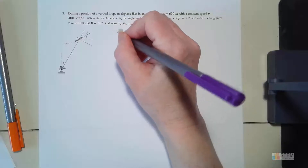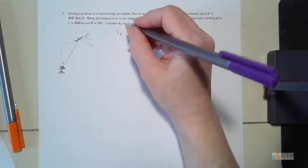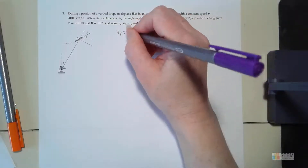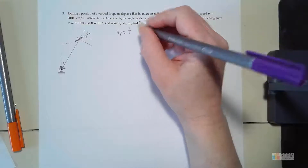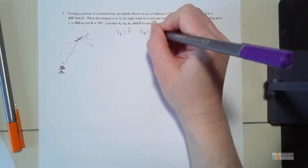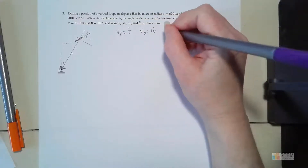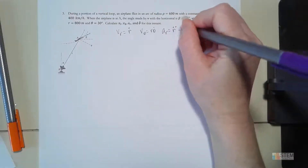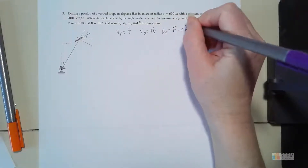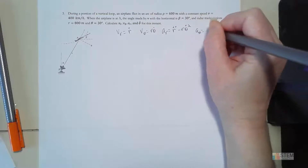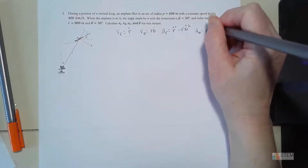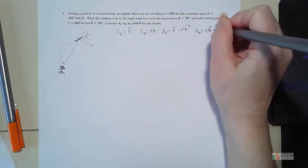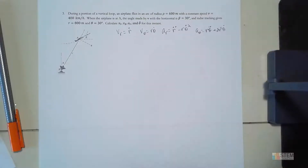Let's write down the equations. vr equals ṙ. vθ equals r·θ̇. ar equals r̈ minus r·θ̇². And aθ equals r·θ̈ plus 2·ṙ·θ̇.